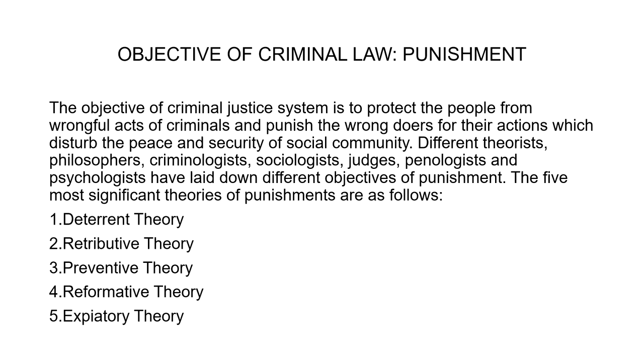The objective of criminal law is essentially to punish the wrongdoer. The objective of the criminal justice system is to protect people from wrongful acts of criminals and punish wrongdoers for actions which disturb the peace and security of the social community. Different theorists, philosophers, criminologists, sociologists, judges, penologists, and psychologists have laid down different objectives of punishment. The five most significant theories of punishment are as follows.